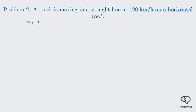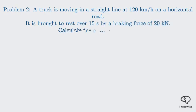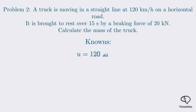Welcome back to Math Zone African Motives. Let's move on to our second problem. This question asks us to find the mass of a truck. We are given its initial velocity, the time it takes to stop, and the braking force applied. Let's begin by extracting the given information, or our knowns, from the problem. The initial velocity U is 120 kilometers per hour. The truck is brought to rest, so the final velocity V is 0. The time taken T is 15 seconds. And the braking force F is 20 kilonewtons.